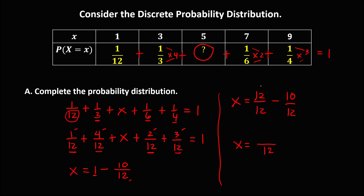Since the denominators are the same, we subtract the numerators: 12 minus 10 equals 2, giving 2/12. Reducing by dividing by 2, the unknown probability is 1/6.